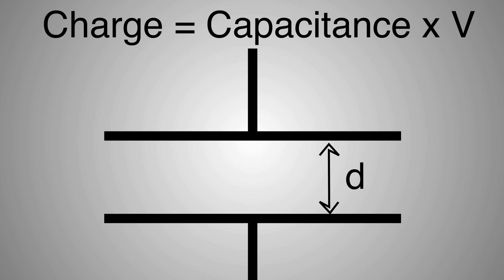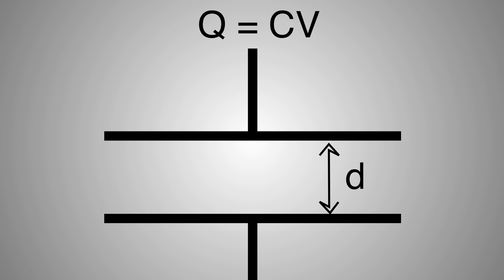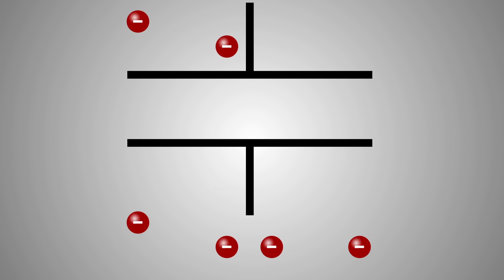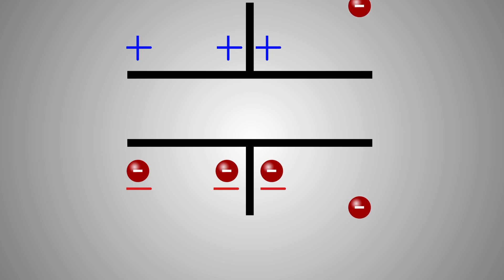Or, in engineering parlance, Q equals CV. What this equation means is that when a voltage is applied across the gap of a capacitor, electrons move onto the plate connected to the negative side of the voltage, and an equal number are pulled off the positive side.